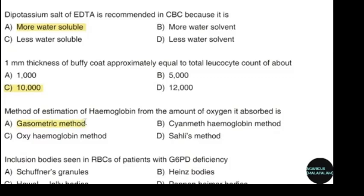Inclusion bodies seen in RBCs of a patient with G6PD deficiency. Correct answer: option B — Heinz bodies.